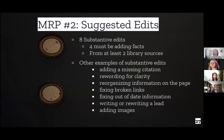So MRP2 — this is where they are suggesting edits. If they did that worksheet, they should already have some support and ideas about where to go, and now they're getting more specific. In MRP2, students suggest eight substantial edits; of those edits, half must be adding facts, and these facts must come from at least two library sources. We made this requirement because we found that students tended to avoid adding facts, opting for edits that didn't require research, which resulted in an overall lower quality of edits. And when they did do research, they weren't using our library system, so the quality of sources was getting a little iffy.